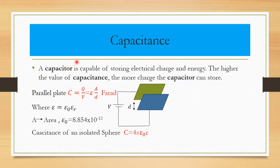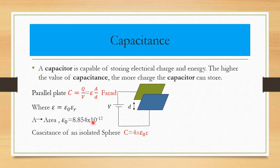Next is capacitance. A capacitor is capable of storing electrical charge and energy. The higher the value of capacitance, the more charge the capacitor can store. We will see two types: parallel plate capacitor and isolated sphere capacitor. For a parallel plate capacitor — two parallel plates separated by distance d with supply voltage V — the capacitance is C = q/V = εA/d, where ε = ε₀εᵣ and ε₀ = 8.854 × 10⁻¹² F/m.